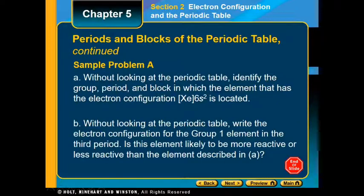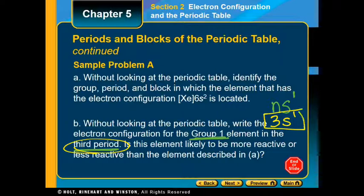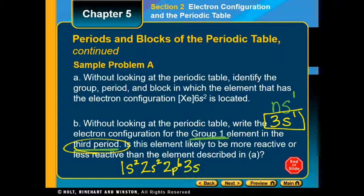The other sample problem asks: without looking at the periodic table, write the outer electron configuration for an element in group 1, 3rd period. Group 1 falls in the S block, and the generic configuration is ns1. Since it's group 1, I fill in the value of n. Since it's the 3rd period, n equals 3, giving an outer configuration of 3s1. If you have a periodic table, you can fill in everything that comes before that: 1s2, 2s2, 2p6, and then 3s1.